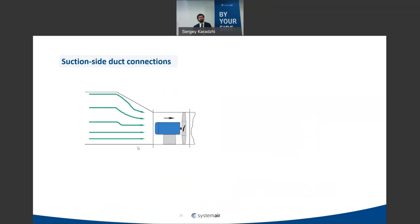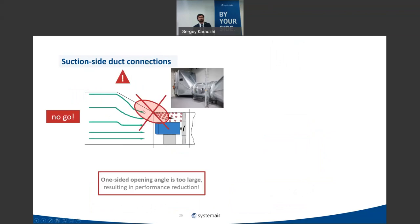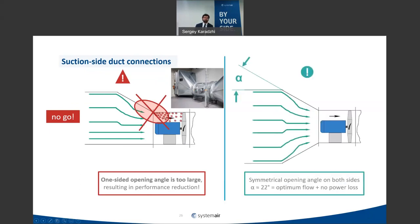A side duct connection on the inlet is also not recommended, because the angled duct creates flow separation that enters the fan, causing part of the fan to operate in a separation zone — which, as mentioned, can even lead to fan destruction. Always use a symmetric opening angle. On the inlet side, you can use larger angles than on the outlet because you have a confuser — the velocity is increasing — and the optimum angle according to technical references is around 22 degrees.